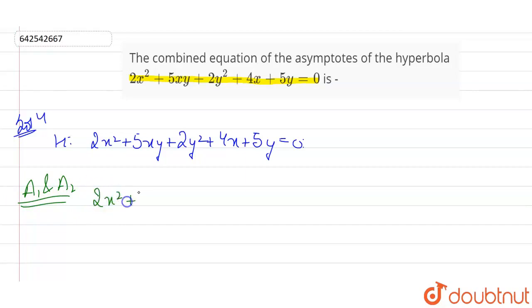So this will become 2x² plus 5xy plus twice of y² plus 4x plus 5y. And some constant, let's suppose this constant is what? Lambda right now. So this is what? Combined equation of asymptotes.